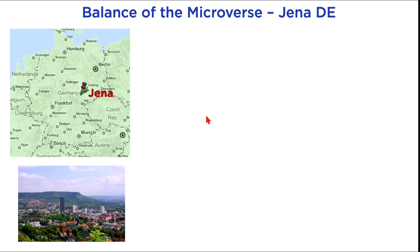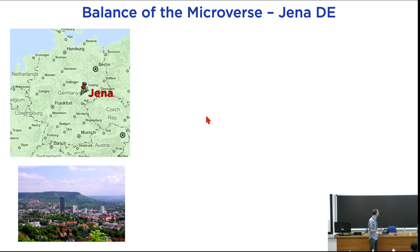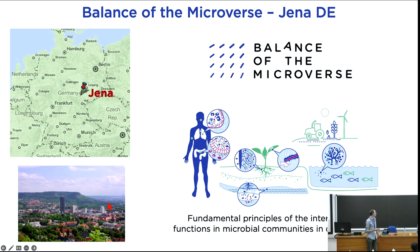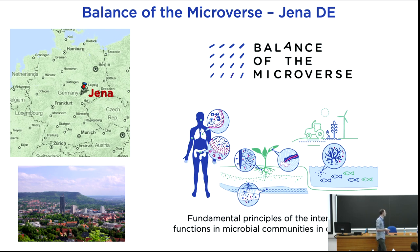First, something regarding Jena, because last week many people asked where it is. Jena is a small city in the middle of Germany, in the east part, surrounded by nature — very nice. In Jena there is the Balance of the Microverse, an excellent cluster recently established. The idea is to gather different expertise to study principles and interactions of different microbial communities — from gut, water, soil, and plants — and how humans interact with them and how they interact with each other.